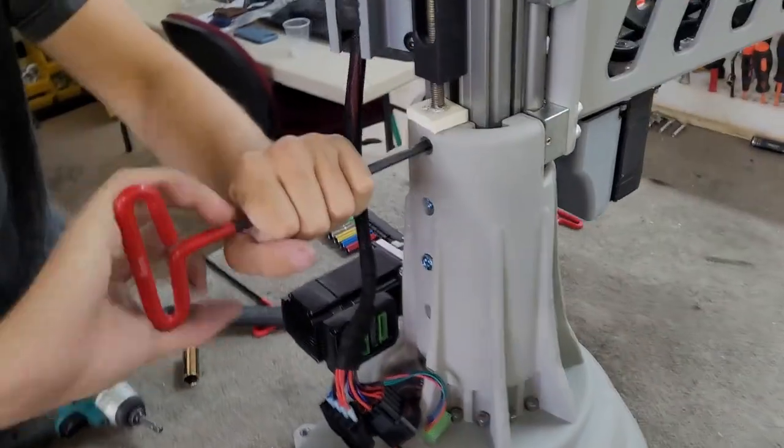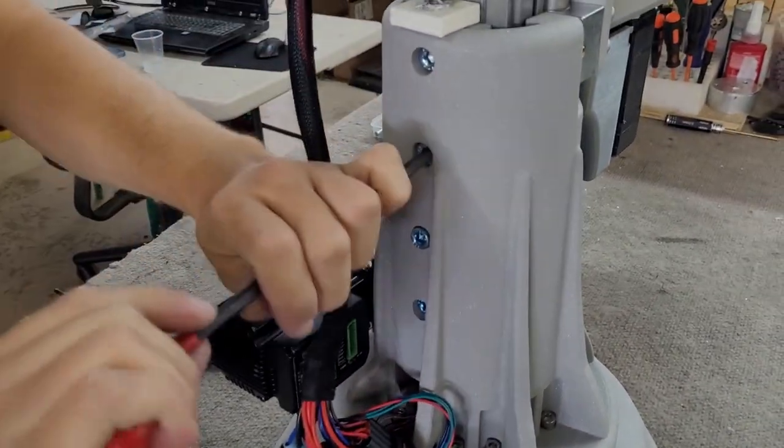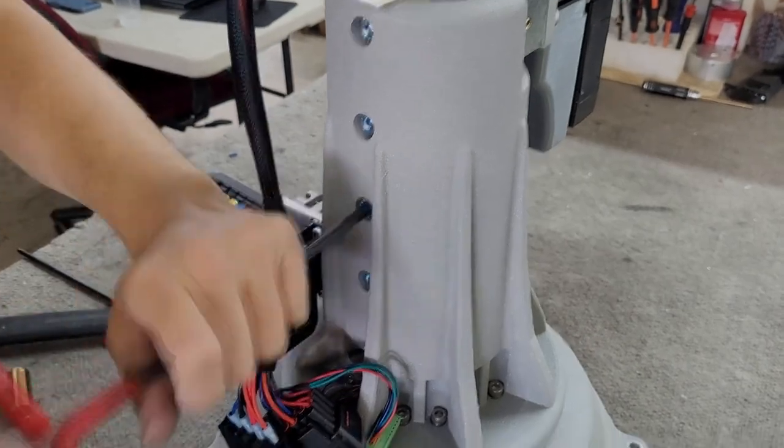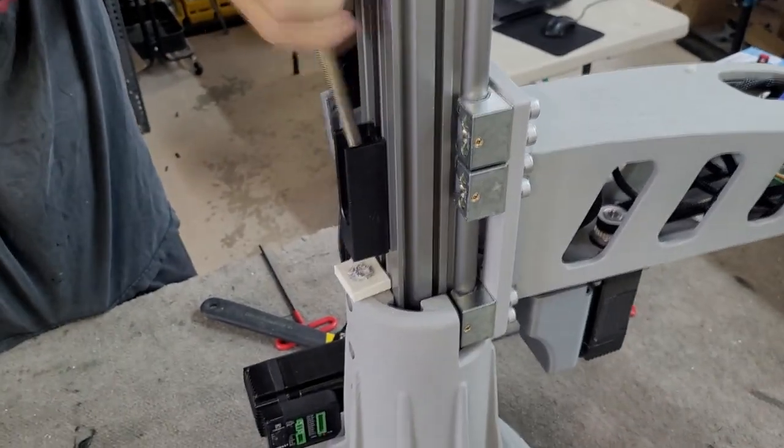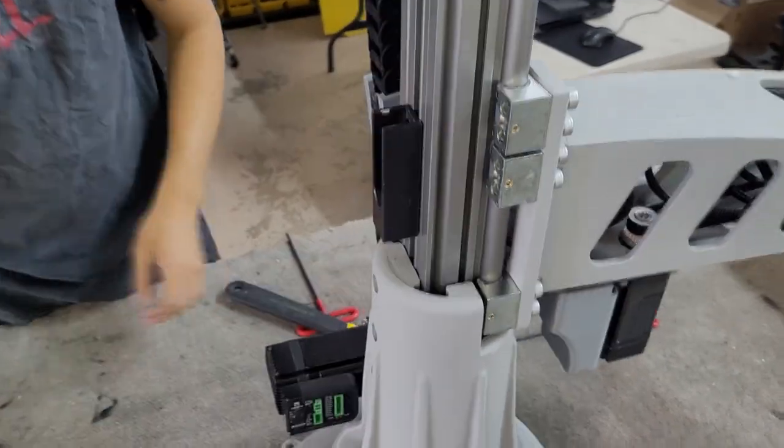With the belt tightened, you can now tighten all of the bolts on the tower. Confirm that the belt is still on the pulley correctly. Remove the belt tightening tool and put back the chain holder in its place.